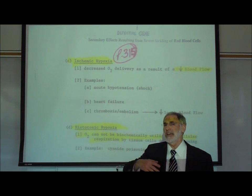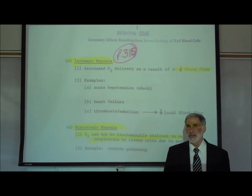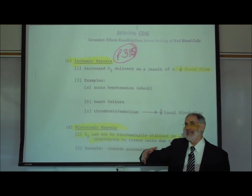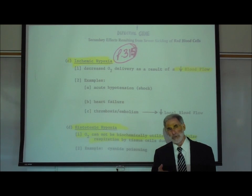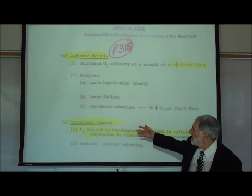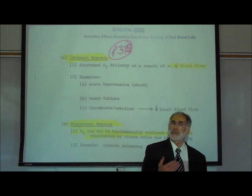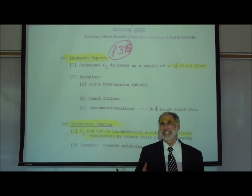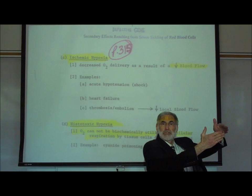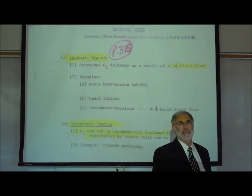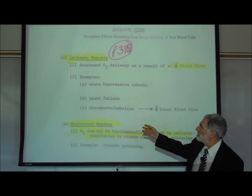Another cause of ischemic hypoxia is heart failure. If the heart ejects less blood than normal — a decrease in cardiac output — or if there is an arrhythmia, the heart is pumping less blood through the vessels than normal, resulting in reduced delivery of oxygenated blood to the tissues. Another cause is a blood clot: a thrombosis that forms in a vessel and obstructs blood flow, or an embolism — a dislodged blood clot carried in the bloodstream to somewhere else in the body where it blocks blood flow to tissue.